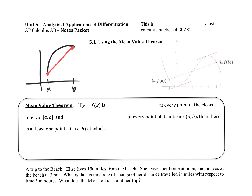What the mean value theorem says — the average value theorem — is: if this function is continuous, so I never have to lift up my pen, and it's also differentiable, meaning I never have cusps or corners, there will be at least one other point that also has that same slope.